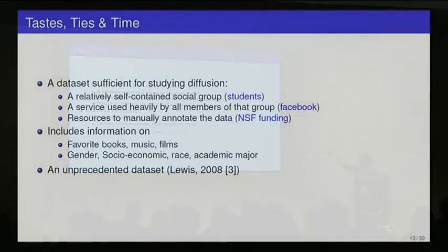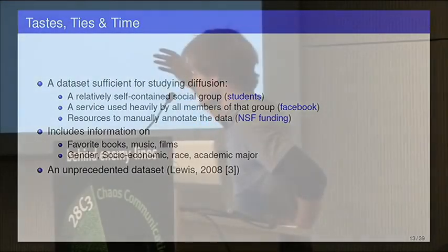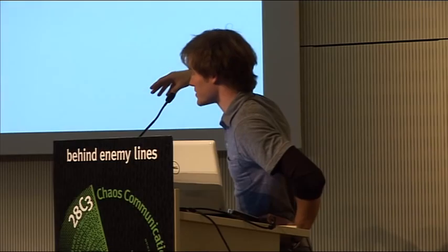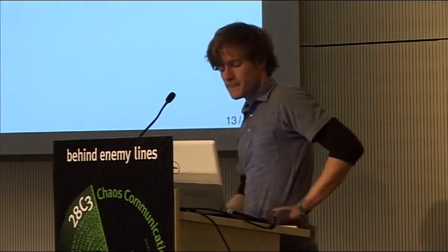This data set was from a relatively self-contained social group. It was collected on freshman students going into a U.S. private university where people would come from all over the country, sever their existing social ties, and be living in this little isolated college community. Another nice aspect of this data set was that it was from Facebook, and college students at the time very heavily used Facebook. So if you were friends with somebody in college, it's very likely that that friendship would show up in this data set. And the group that collected this data had the resources to manually annotate it, to get people to look at each profile and say if this field wasn't filled in, if their gender wasn't filled in, they can look at the picture and tell what the gender is. So they manually enriched this data set.